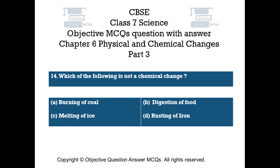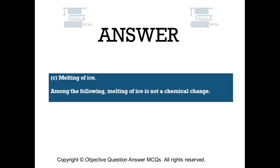Question number 14. Which of the following is not a chemical change? Option A burning of coal, Option B digestion of food, Option C melting of ice, Option D rusting of iron. The right answer is Option C — melting of ice. Among the following, melting of ice is not a chemical change.